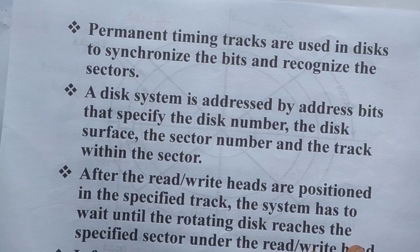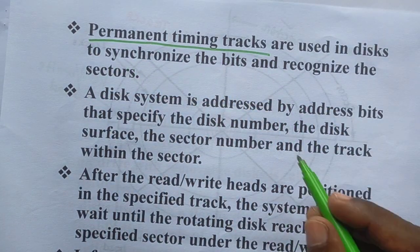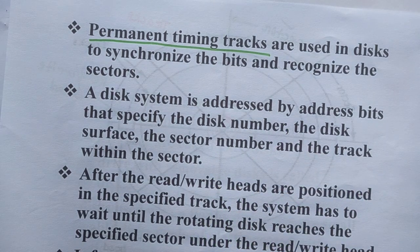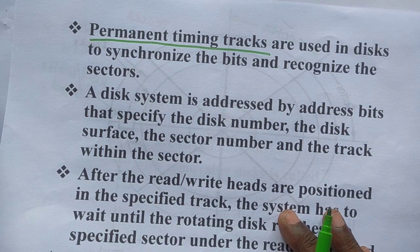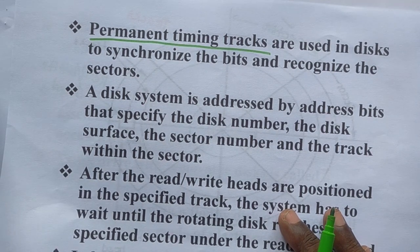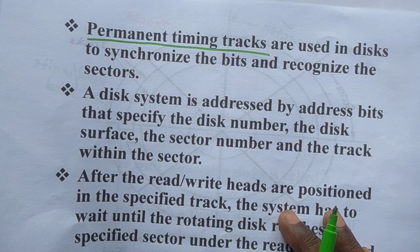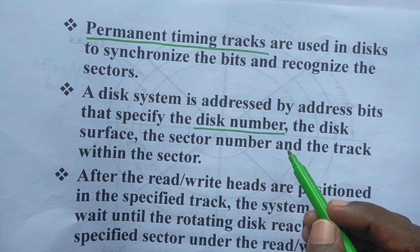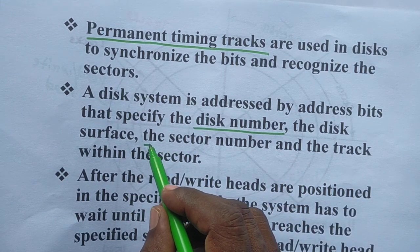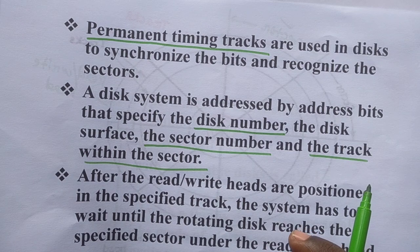Permanent timing tracks are used in a disk to synchronize the bits and recognize the sectors. The read-write head moves from one track to another with a certain time period, and whenever the time is over, it continues depending on the time slots. A disk system is addressed by address bits that specify the disk number, the disk surface, the sector number, and the track within the sector.